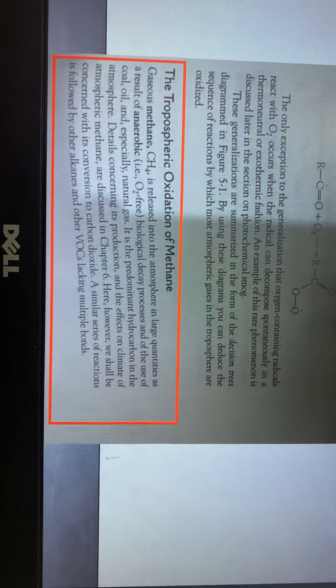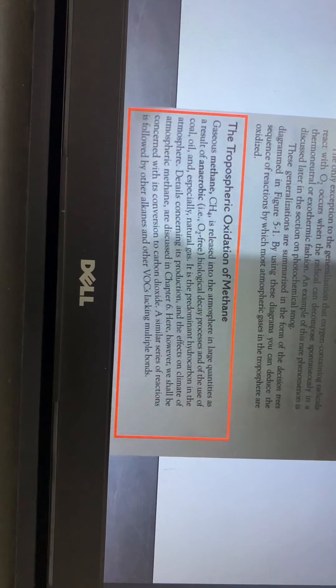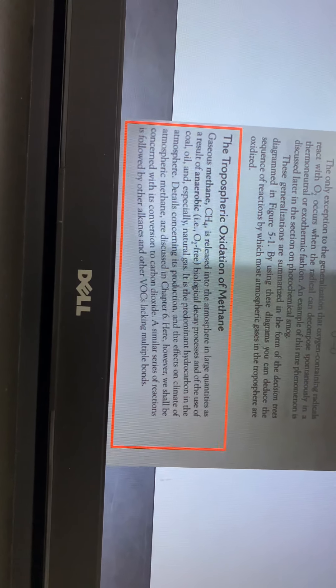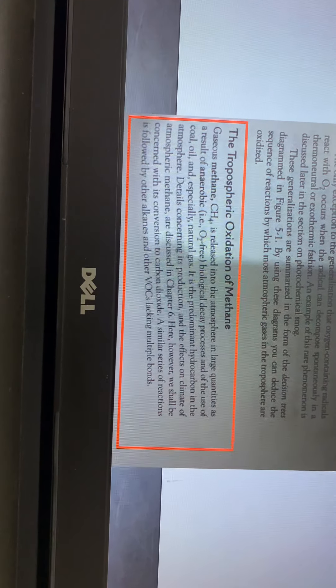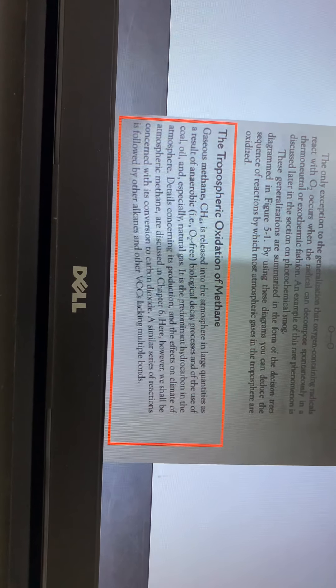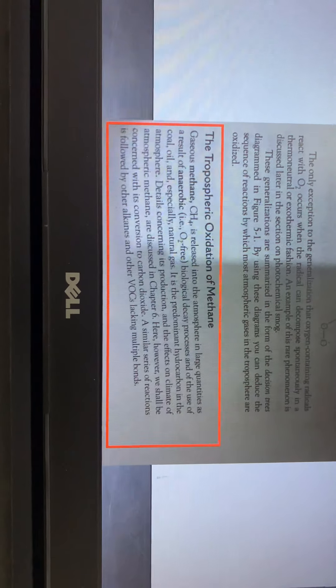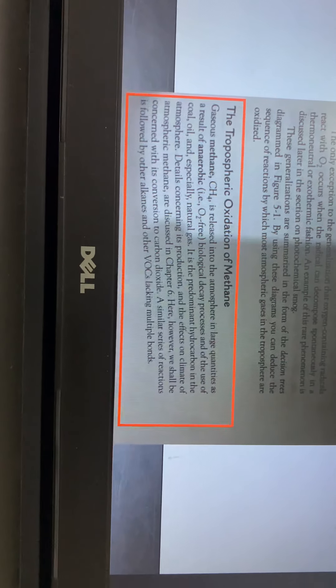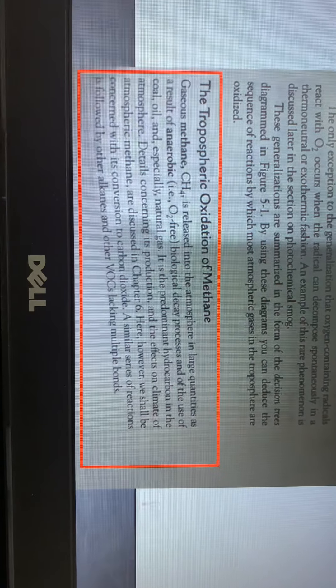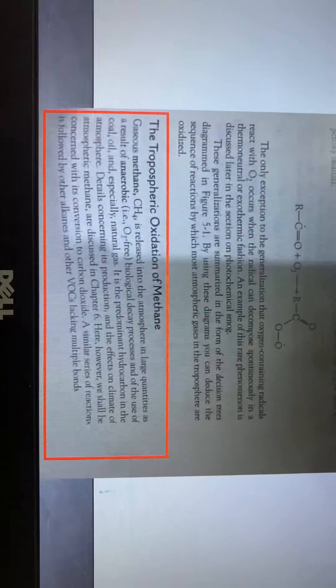However, we shall be concerned with its conversion into carbon dioxide. This is a series of reactions followed by other alkanes and other volatile organic compounds lacking multiple bonds. These are the aliphatic compounds which are not double or triple bonds. This is the same chain reaction which we will see in the next slides.